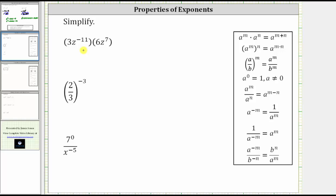Let's first rewrite this expression using the commutative property of multiplication, which means we can change the order of the multiplication. Let's write this as three times six times z raised to the power of negative 11 times z raised to the power of positive seven.